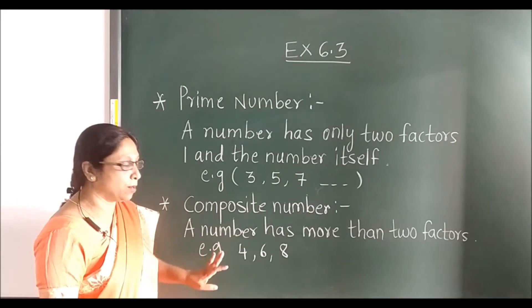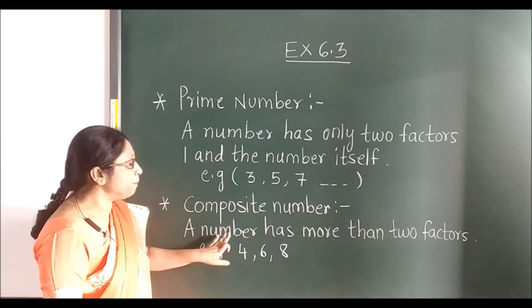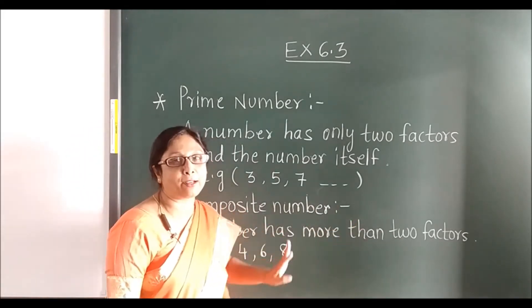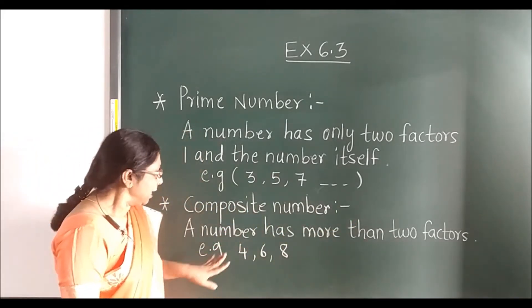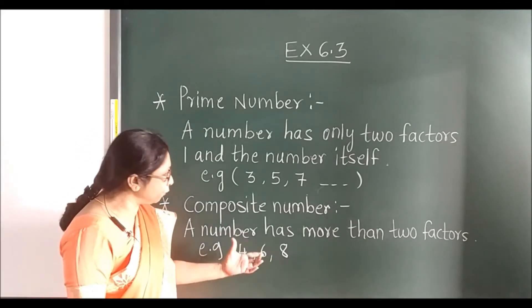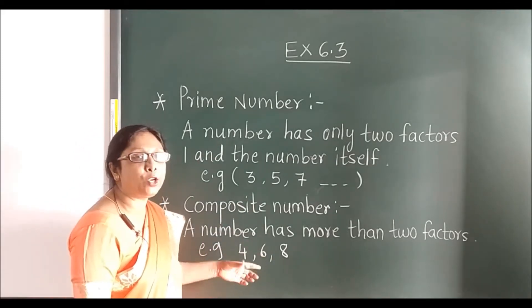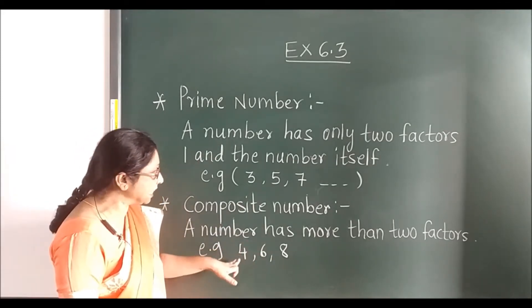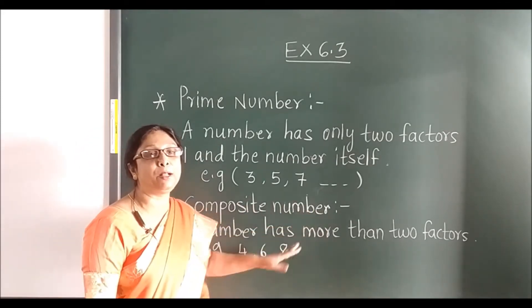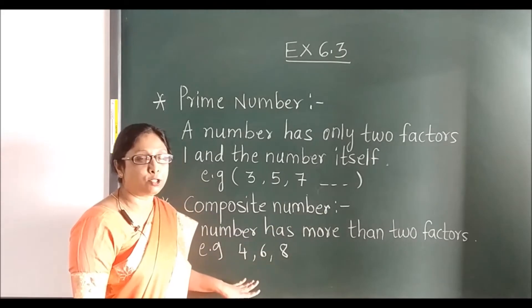Composite number: a number that has more than two factors. Examples: 4, 6, 8. You can see that these numbers come in other tables also.